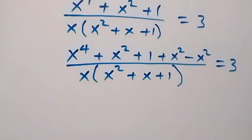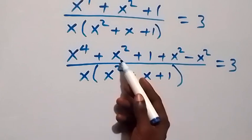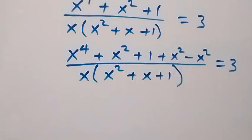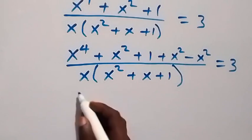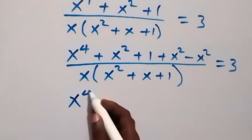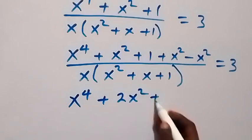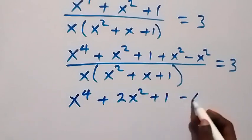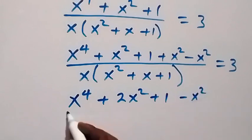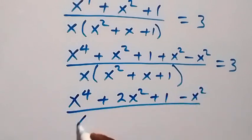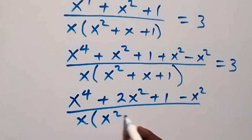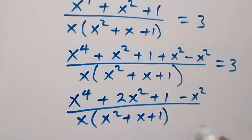We can add x squared plus x squared to give us 2x squared. So we have x raised to power 4 plus 2x squared plus 1 minus x squared, over x times bracket x squared plus x plus 1, then equals to 3.